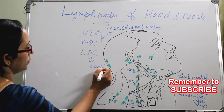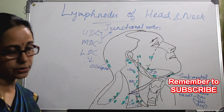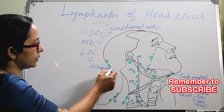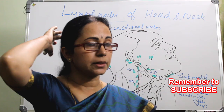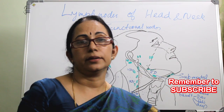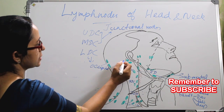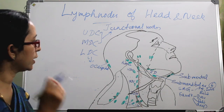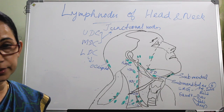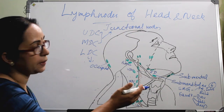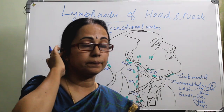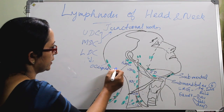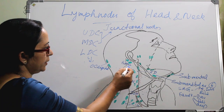The occipital group of lymph nodes is situated on the occipital area, on the back of the head, at the upper end of the trapezius muscle. The drainage area is from the scalp of the back of the head and the upper part of the neck. The post-auricular nodes, also called retro-mastoid nodes, drain the scalp above the pinna, the external auditory canal, and the auricle. Both groups drain in turn to the upper deep cervical.